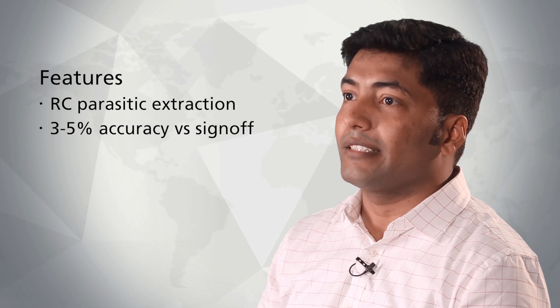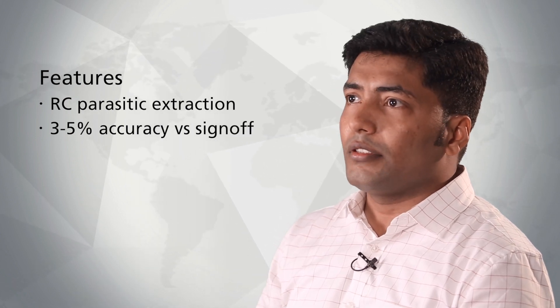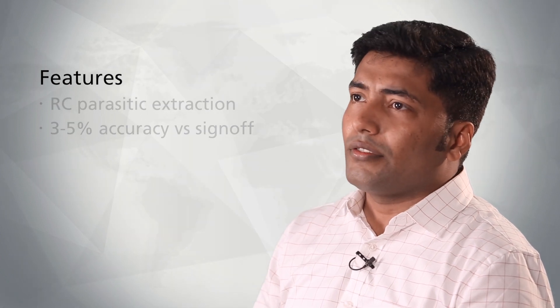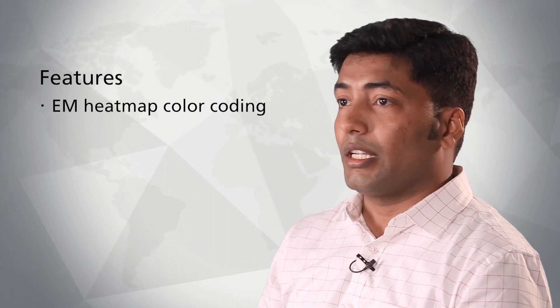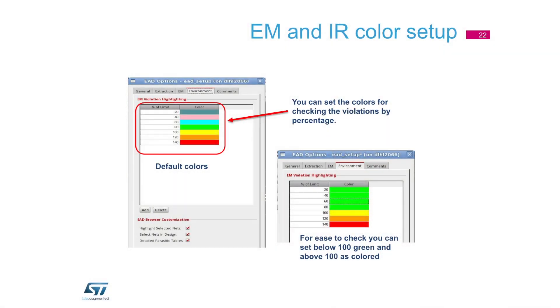EAD has quite good features. A few that I liked — first of all, it has a cool feature of RC parasitic extraction. It gives you the RC values. We checked those values with simulation results and it gave us accuracy of up to 3-5%. That's a good value of accuracy. Another feature is the color coding. For example, if you want a particular amount of current in a net, you can set the color so that if the current goes beyond that value, it flags red; otherwise it's green. While making the layout on the fly, it's a cool feature — you just get to know when you are exceeding the value of current in the layout.